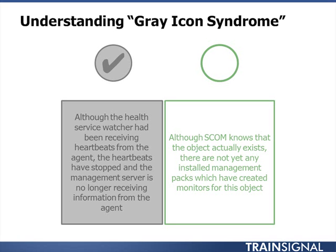Perhaps one of the most confounding things you'll run into in Operations Manager is what I call gray icon syndrome. There are actually sort of two versions of gray icon syndrome that cause a lot of confusion — one is gray and one is green, but gray icon syndrome is the frustrating one. When you have a gray icon with a check mark, this means that the health service watcher had been receiving heartbeats from the agent and it was seeing monitored items.